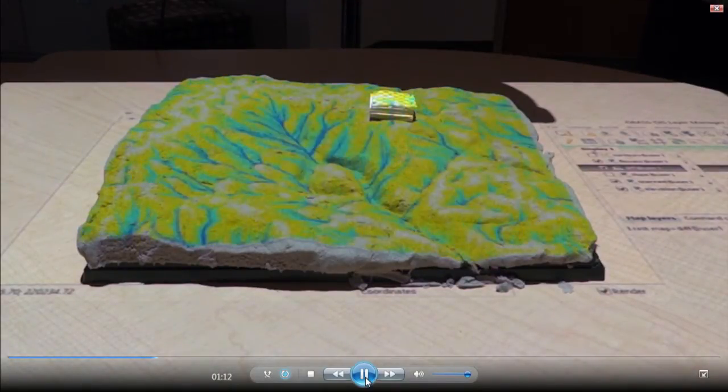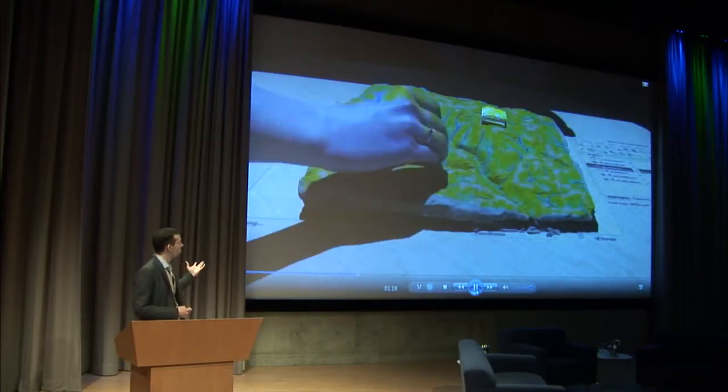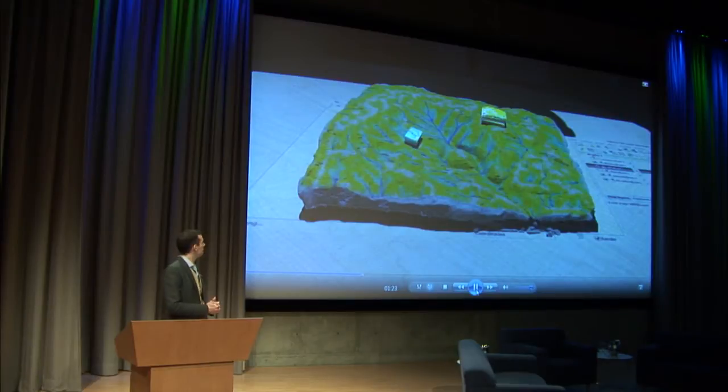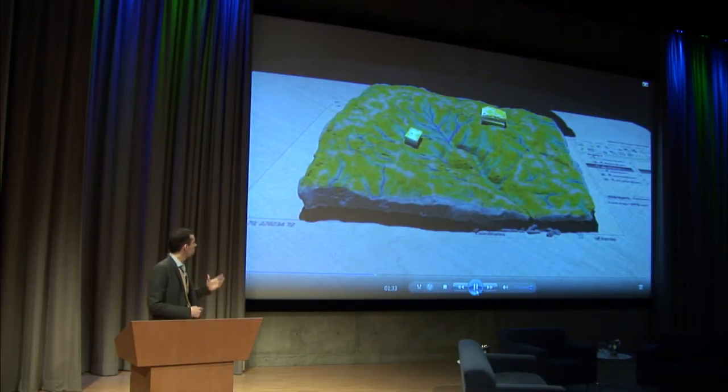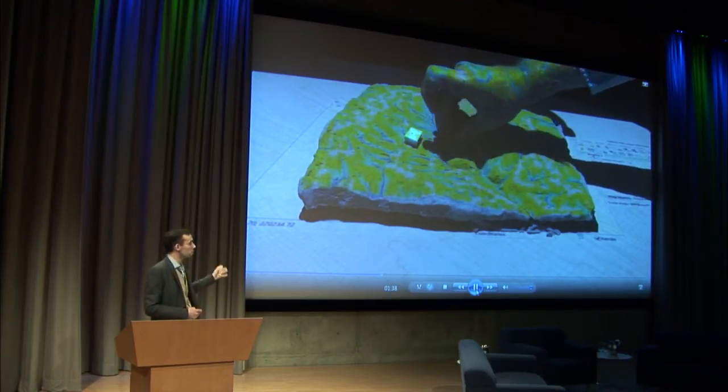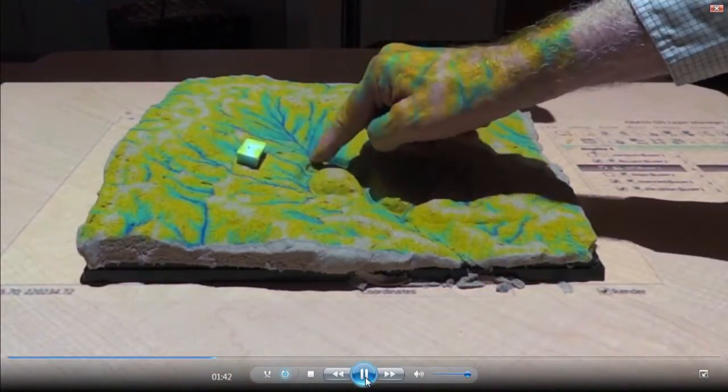It's a coupling of a physical model with a virtual model. Here we're using a physical model that's made of polymeric sand and we're scanning it with a Kinect scanner and we're running a flow accumulation simulation on it.